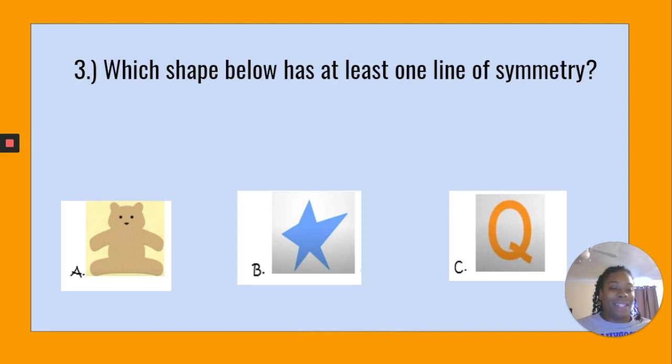And our last question: Which shape below has at least one line of symmetry? Your correct answer should have been A. The teddy bear. Excellent job boys and girls! I'll see you back here tomorrow for our lesson on creating lines of symmetry. See you soon!